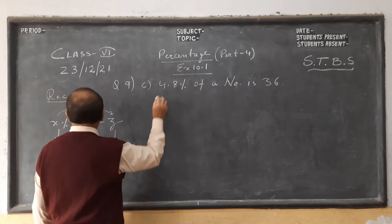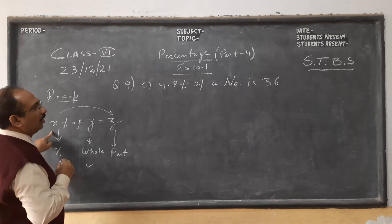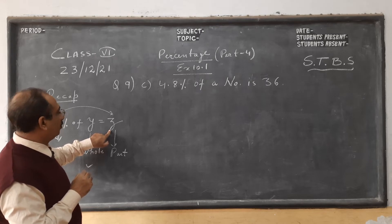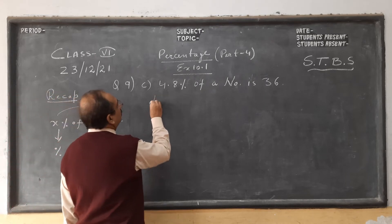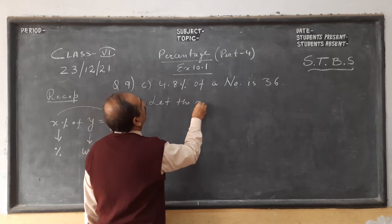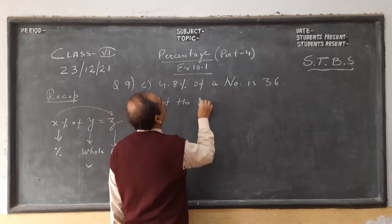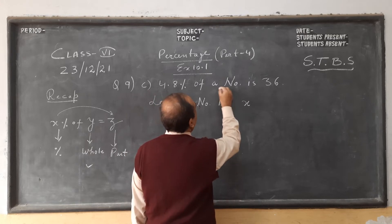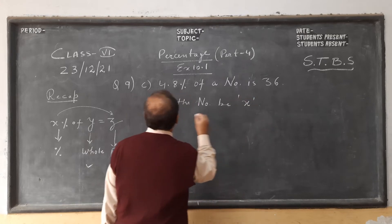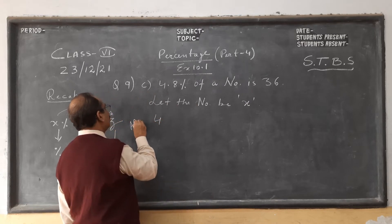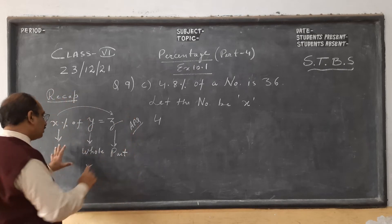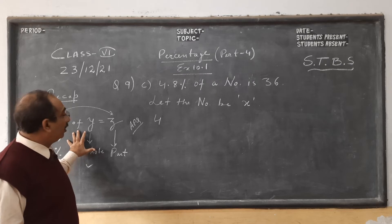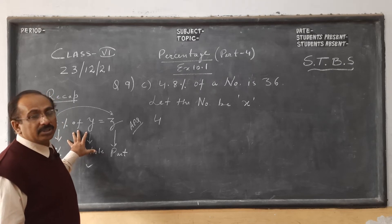Next we move on to 9 part C. In the same logic, this is the percentage of a number which is 36 — meaning 36 is part of the whole. Let the number be X, because A is coming in the sentence. As per the question, 4.8 percent of X is 36. This is the very useful format — in my previous Part 2 and Part 3 videos I explained how we find all three.